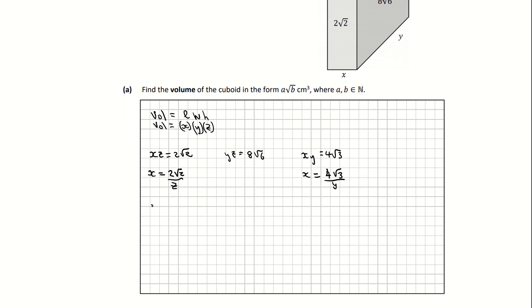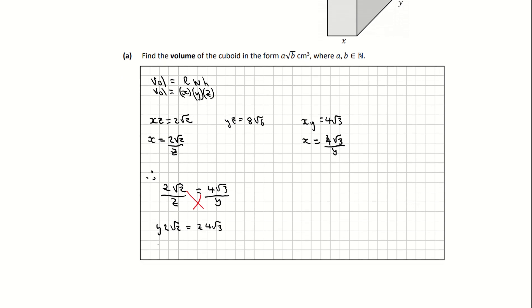Therefore I now have 2 root 2 divided by z equals 4 root 3 divided by y. I'm just going to use some simple cross multiplication now, and that is going to give me y times 2 root 2 equals z times 4 root 3.